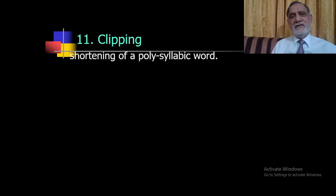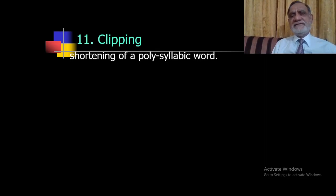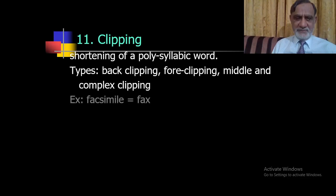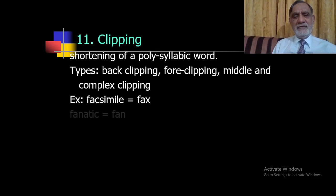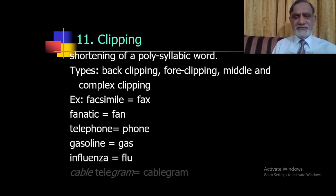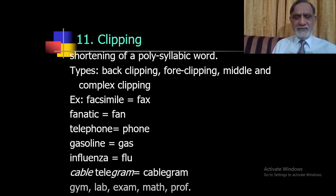The last word formation type is clipping — the shortening of a polysyllabic word. Types include back clipping, fore clipping, middle clipping, and complex clipping. Examples: 'facsimile' becomes 'fax'; 'fanatic' becomes 'fan'; 'telephone' becomes 'phone'; 'gasoline' becomes 'gas'; 'influenza' becomes 'flu'; 'cable telegram' becomes 'cablegram'; and 'gymnasium', 'laboratory', 'examination', 'mathematics' become 'gym', 'lab', 'exam', 'math'.